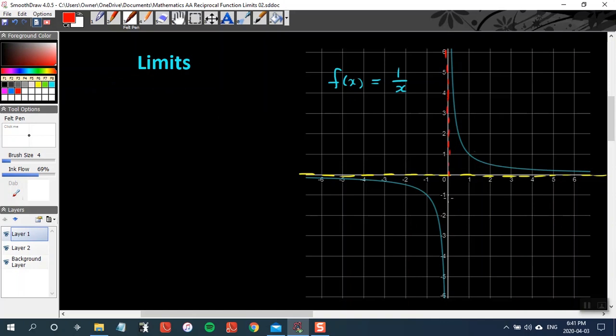Remember, the vertical asymptote is where the division by zero happens in this function. The horizontal asymptote is what the function is outputting as we get far right and far left. In this case, it would be outputting a y-value of zero.